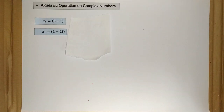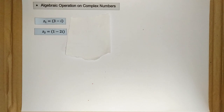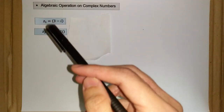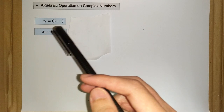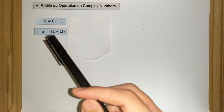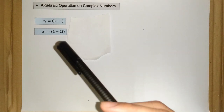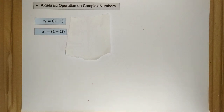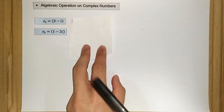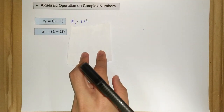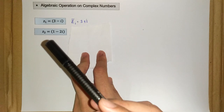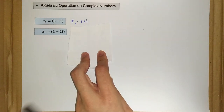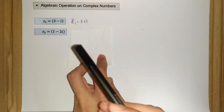Hello and hi everyone. Let's have some fun with the combination of algebraic operations on complex numbers. We have two complex numbers: z1 and z2. z1 is equal to 3 minus i, and z2 is equal to 1 minus 2i. The complex conjugate for z1, denoted by z1 bar, is equal to 3 plus i. The complex conjugate for z2, denoted by z2 bar, is equal to 1 plus 2i.